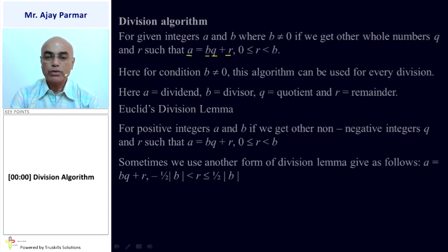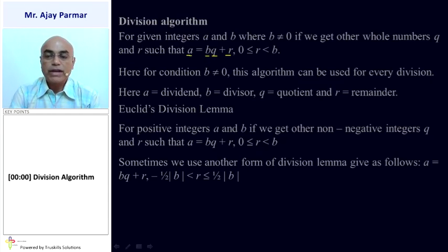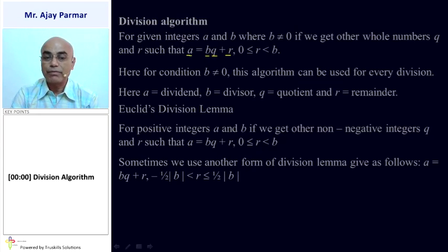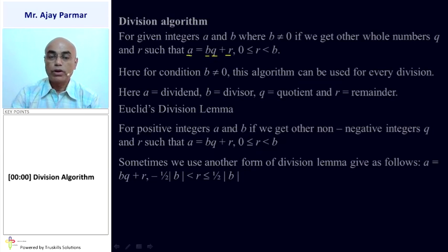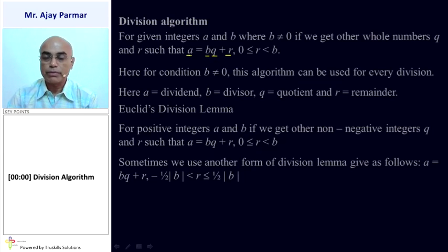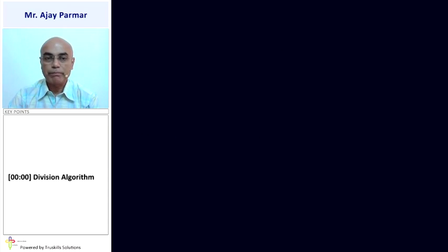Sometimes we make use of another form of this division lemma. That would be A is equal to BQ plus R, where minus half of modulus B is less than R, which is less than or equal to half of modulus B. That is another method of representing the same division lemma.